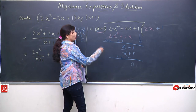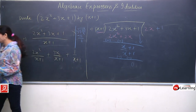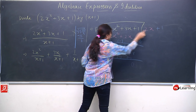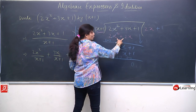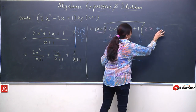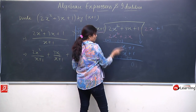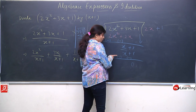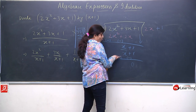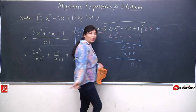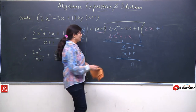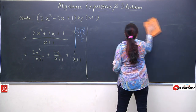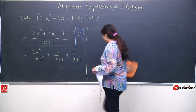Thoda sa division ajeeb lagega abhi, but hum 3-4 aur sums practice karenge to clear ho jaayega. Yahan humne jo number choose kiya 2x tha, to 2x ka dono terms se multiply hoga aur 2 results milenge. Phir 1 choose kiya, to 1 ka dono terms se multiply hoga: 1 times x = x, 1 times 1 = 1. Division rule ke anusaar sign change karenge, cancel ya add jo bhi ho raha hai woh karenge. Final answer: 2x + 1. Ek aur question lenge — sabse pehla step: agar polynomial order mein nahi hai to descending order mein arrange karo.